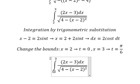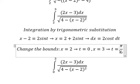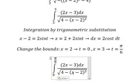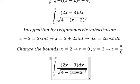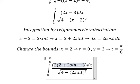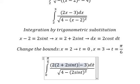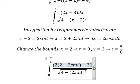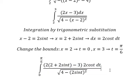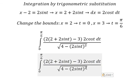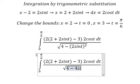Number 2 we change for number 0, number 3 we change for pi over 6. This one we change for 2 plus 2 sine t. The dx we change for 2 cosine t dt. Now we need to simplify this one. We have 4 sine t squared.